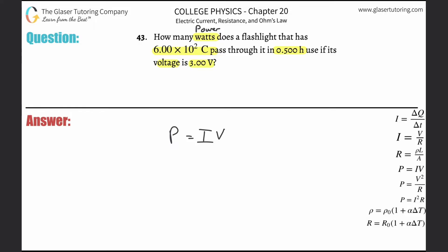So it doesn't give me current, right? But it gives me a charge that is passing through a particular point in an object in 0.5 hours. So we have to remember that the definition of current over here on the top is going to be current is equal to the change in charge divided by the change in time. Q stands for charge. Of course it makes sense.